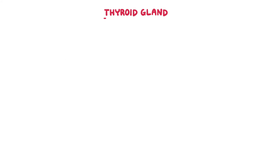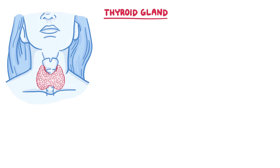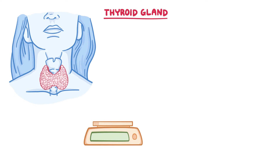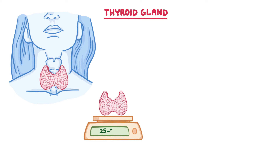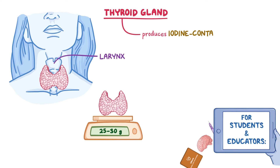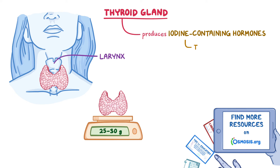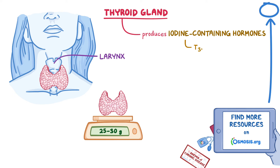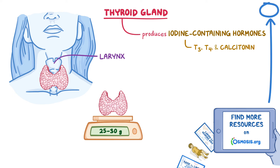The thyroid gland is a butterfly-shaped endocrine gland with an average weight of 25 to 30 grams, located anterior and inferior to the larynx. It produces two types of hormones: the iodine-containing hormones triiodothyronine (T3) and thyroxine (T4), and calcitonin.